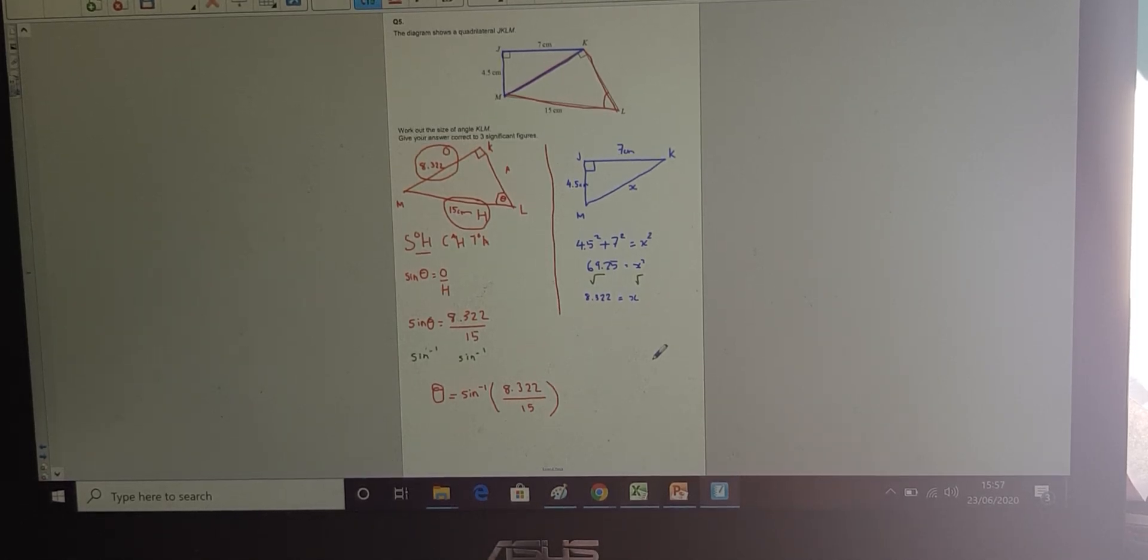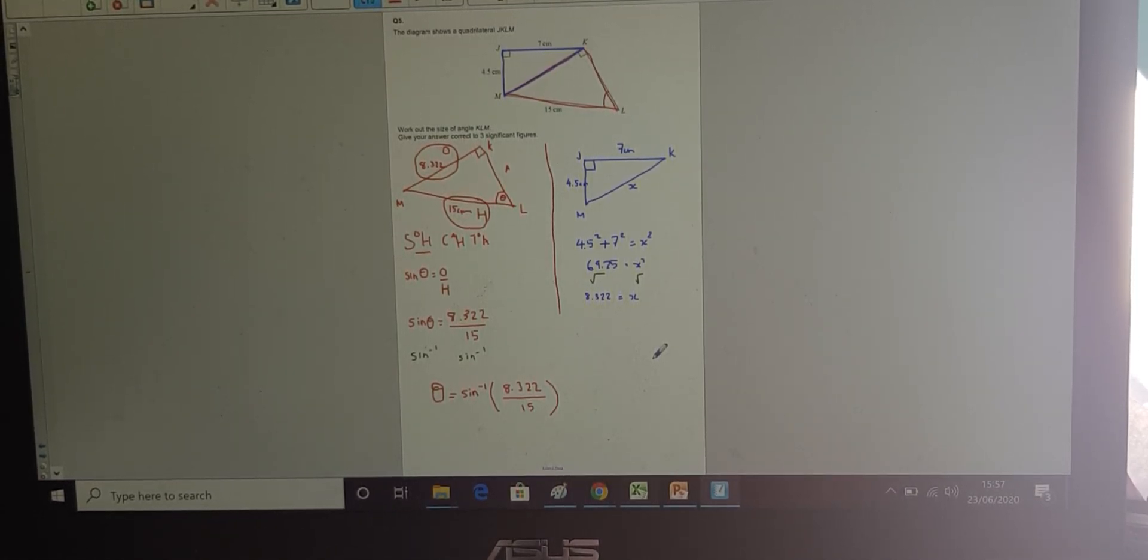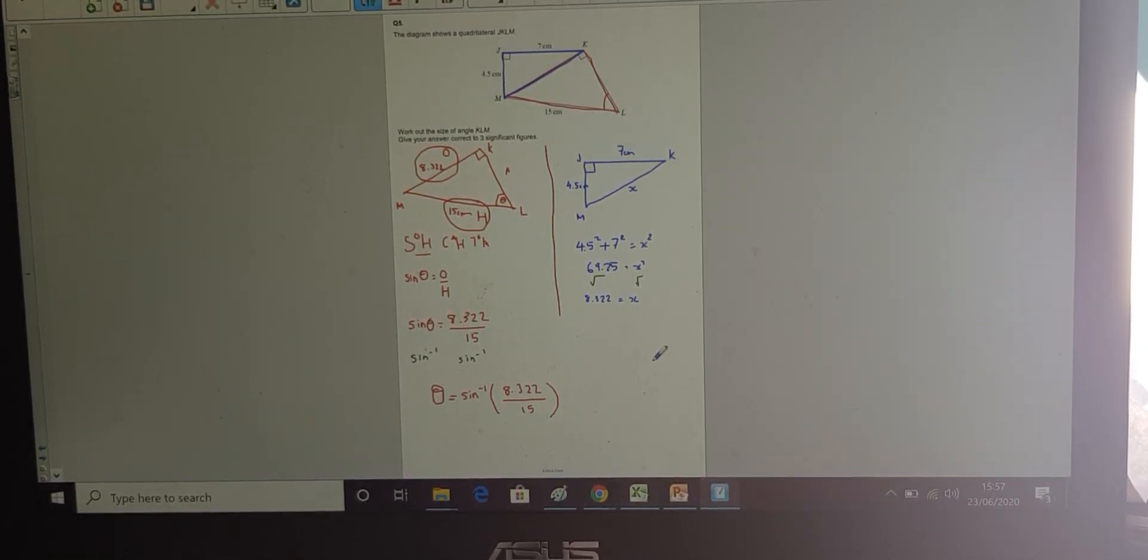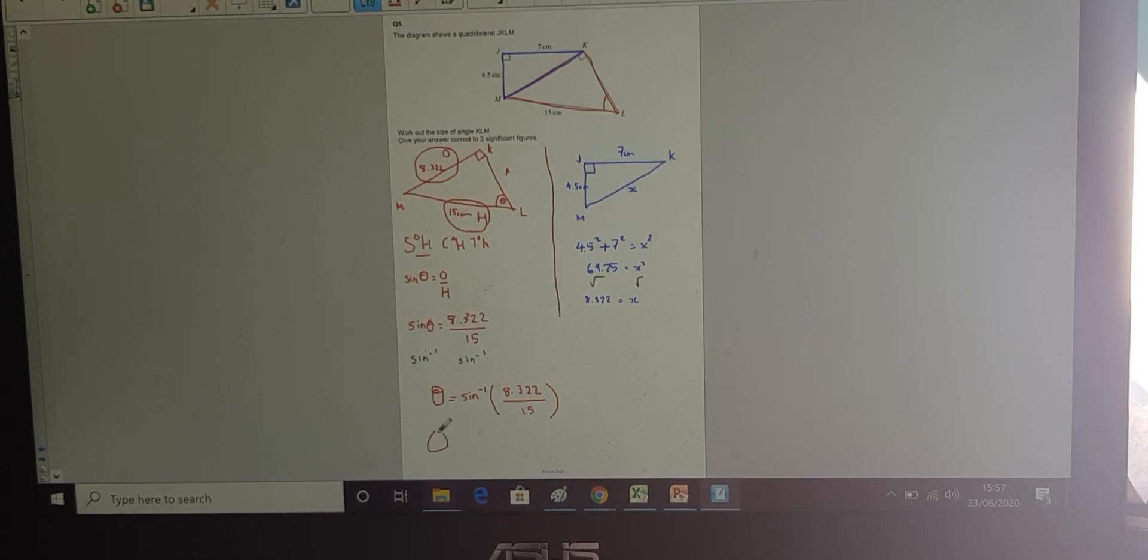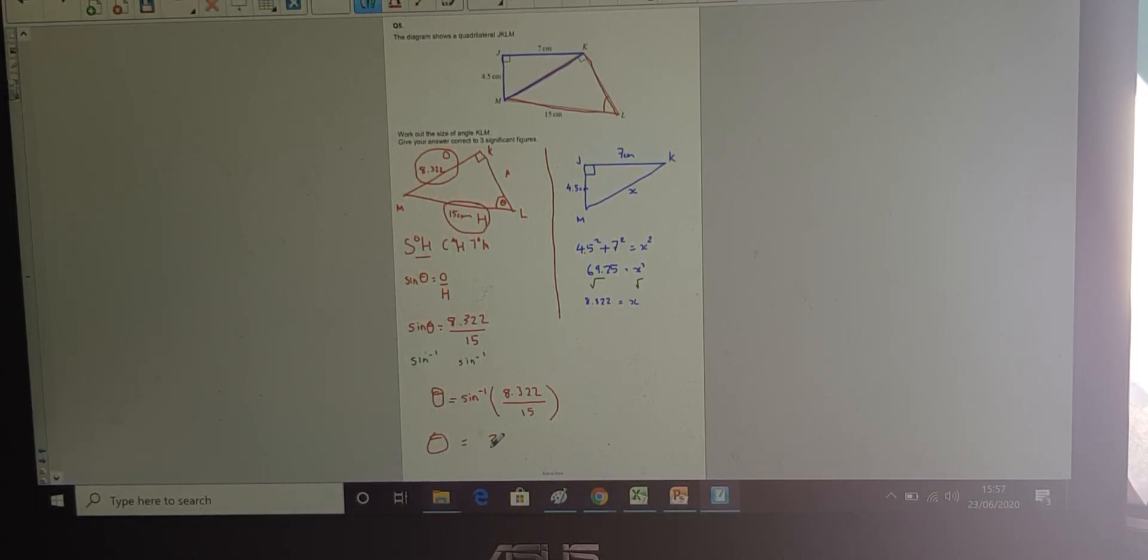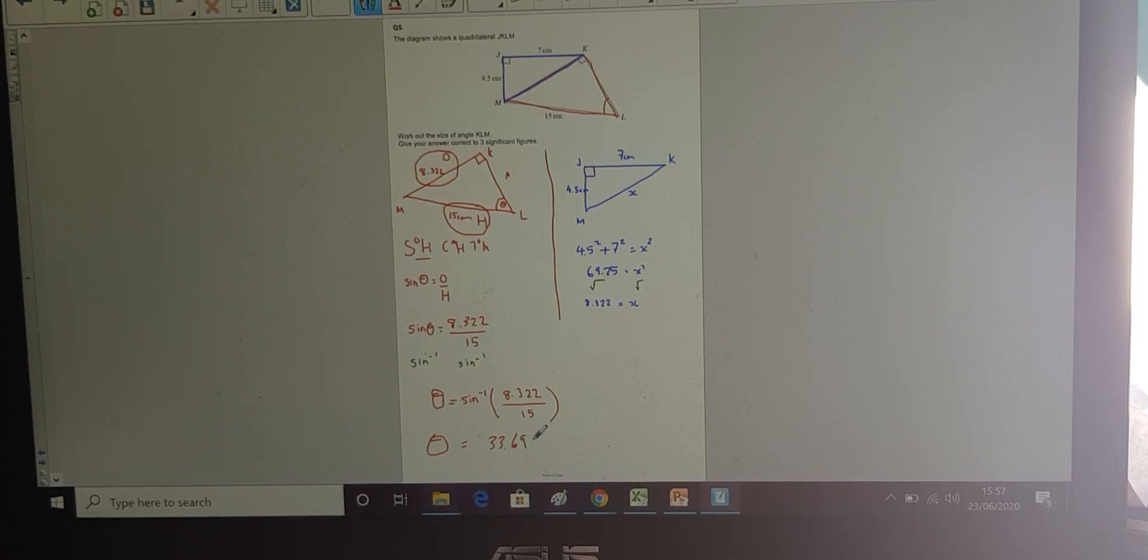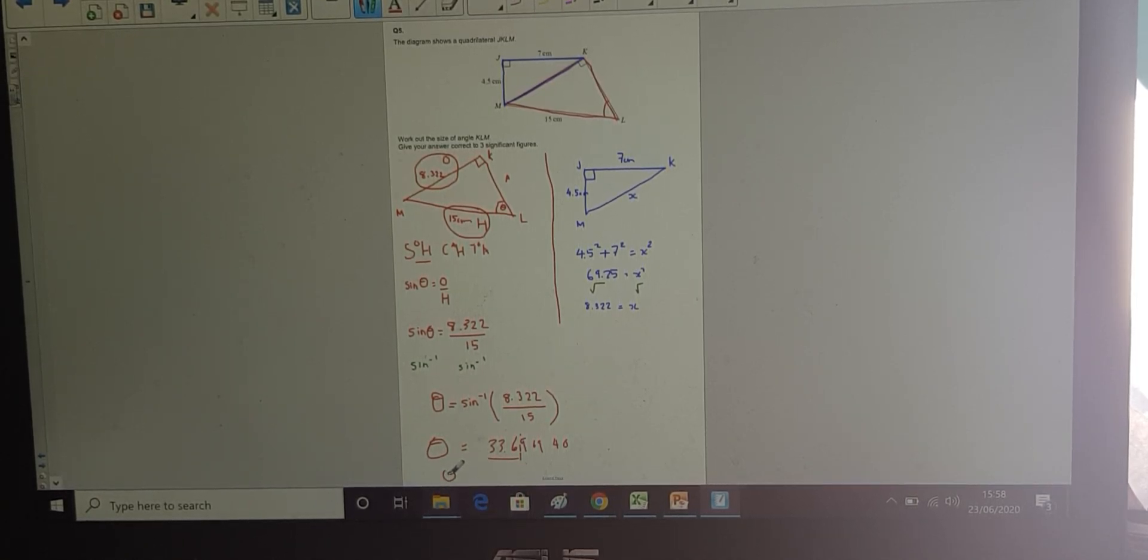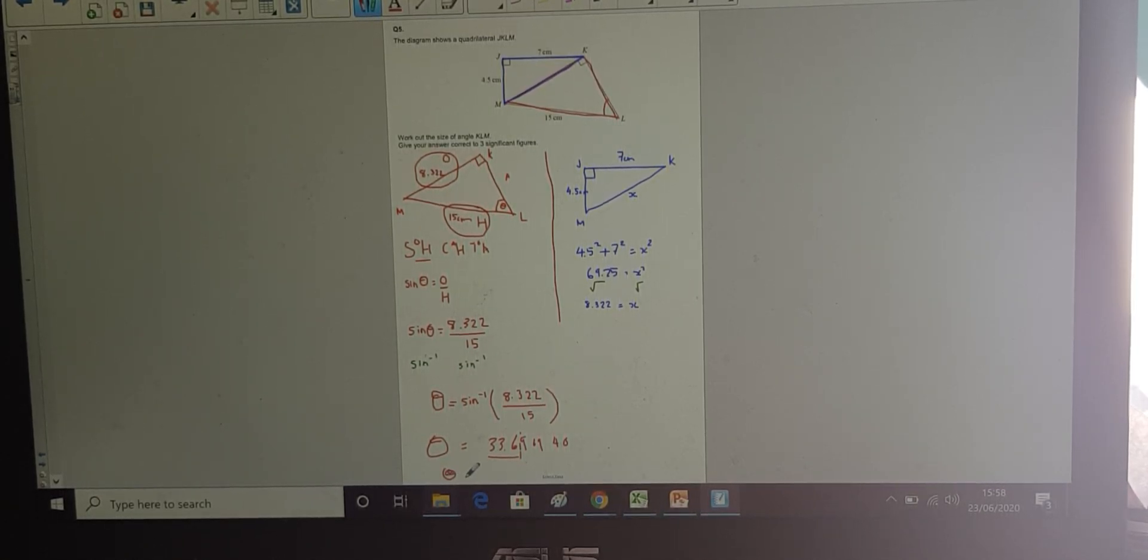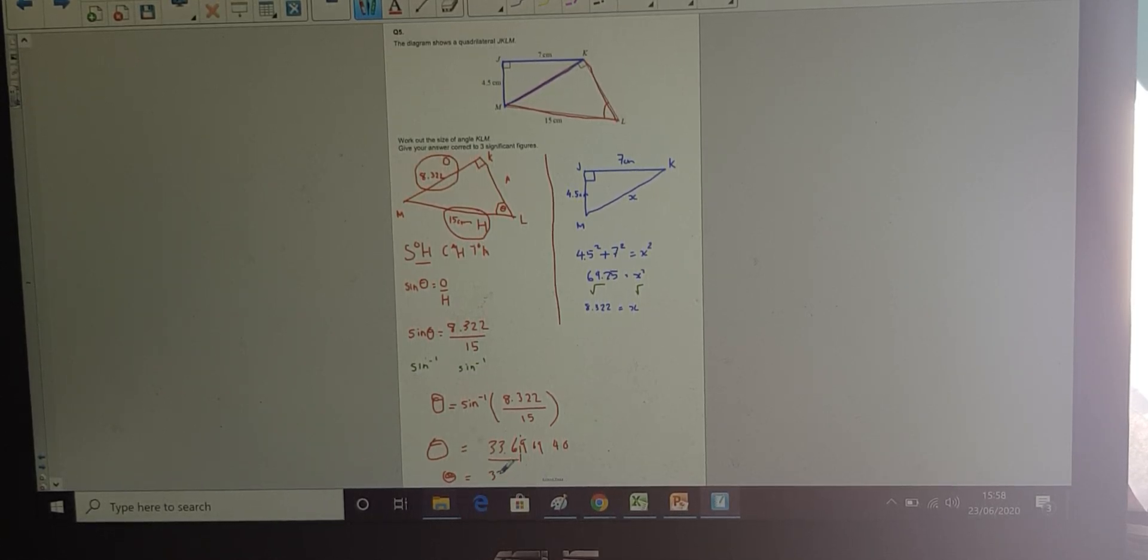Okay, and it gives me 33.6969430. I'll write out that whole thing so you can see. 33.6969430. And it wants it to three significant figures. 1, 2, 3, the 9 is going to round this up, therefore to three significant figures, my answer will be 33.7 degrees.